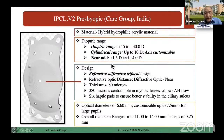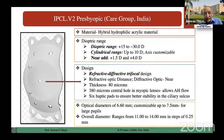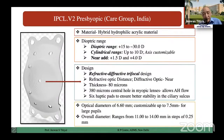We are awaiting the Star EVO Viva's launch in India so that we can have access to these lenses also. As far as my experience goes, I've used CARE Group IPCL presbyopic lenses now for almost more than three years. They do give you a large range of dioptic corrections — from plus 15 to minus 30 diopters — and cylindrical power up to 10 diopters, which is axis-customizable from 0 to 180 degrees. Near add ranging from plus 1.5 to 4 diopters.